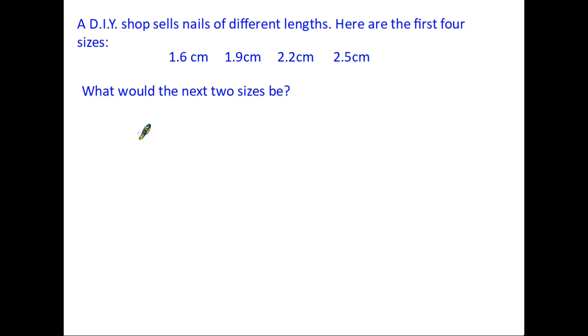You might find that sometimes things get a little more difficult because the number pattern includes decimal numbers. Let's have a look at this example, we have a DIY shop selling nails of different lengths and here are the first four sizes. So we have 1.6 centimeters, 1.9, 2.2 and 2.5 centimeters and we're being asked what would the next two sizes be so we are looking for the two sizes at the end here. Now to do this it's exactly the same as it was before, we need to know what the pattern is, we need to find the rule.